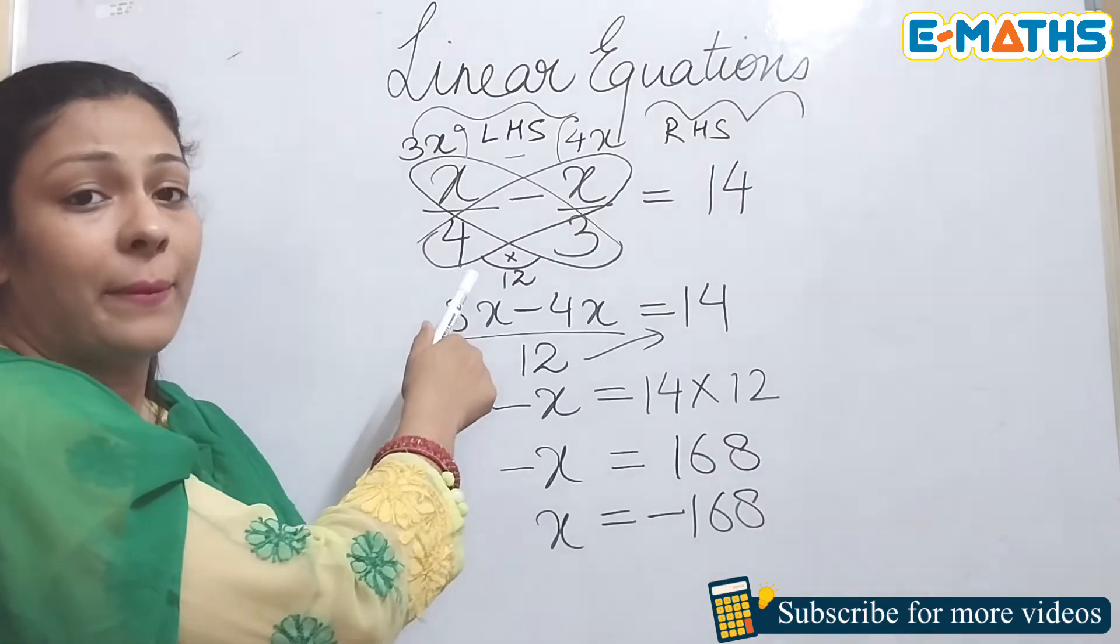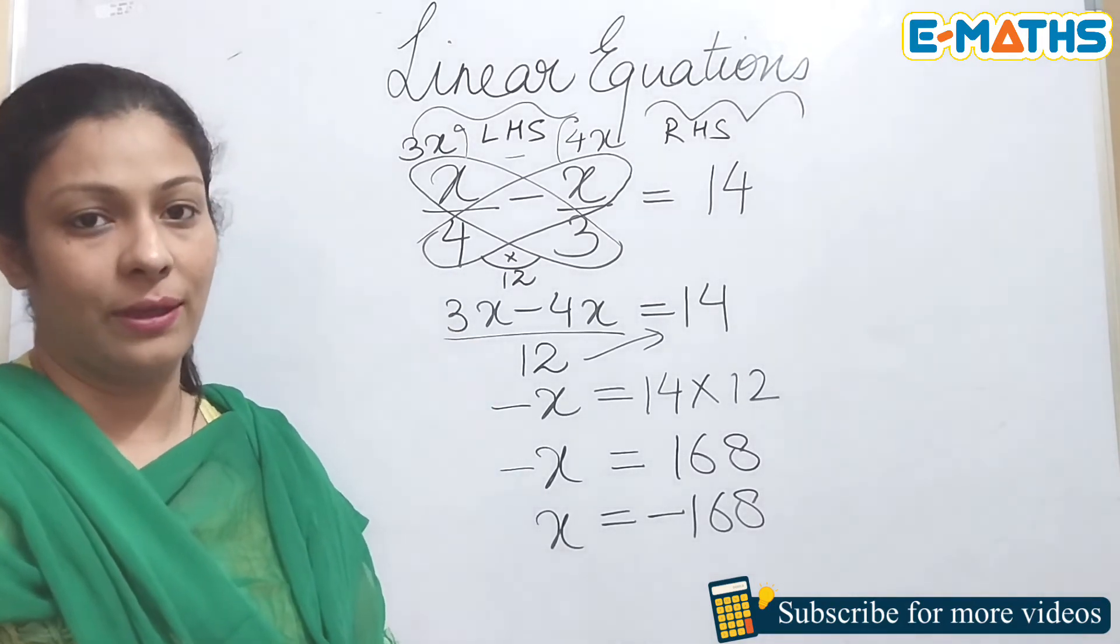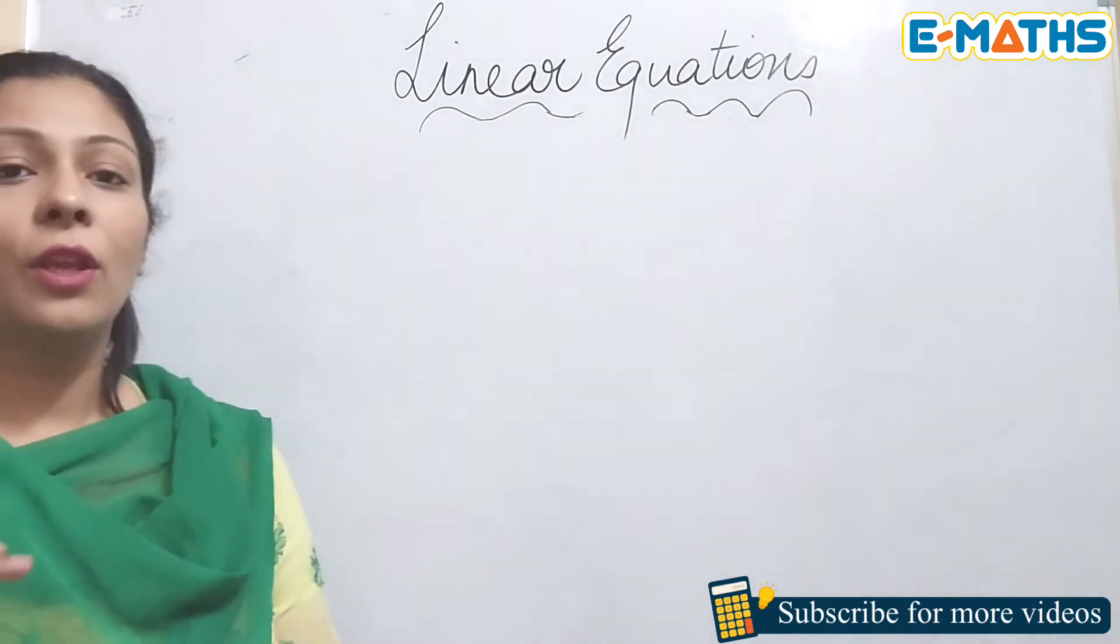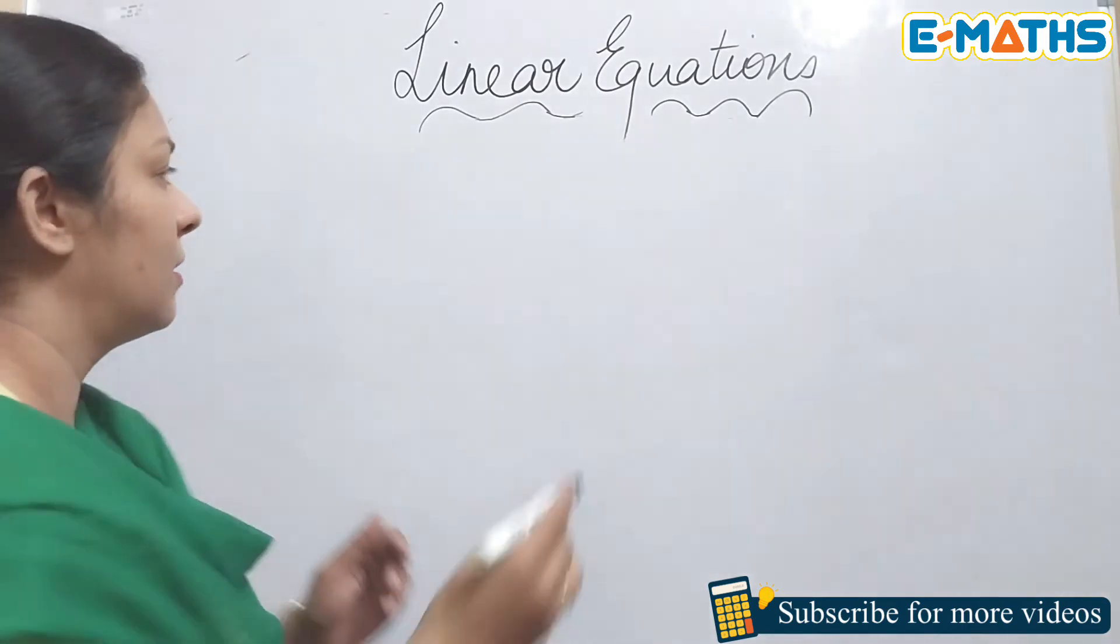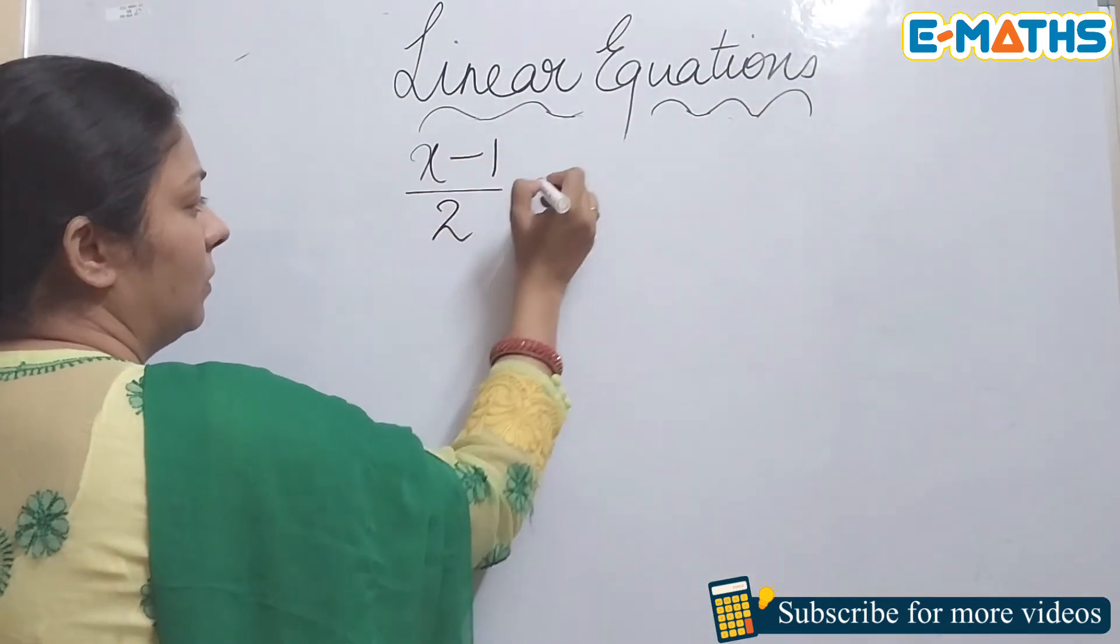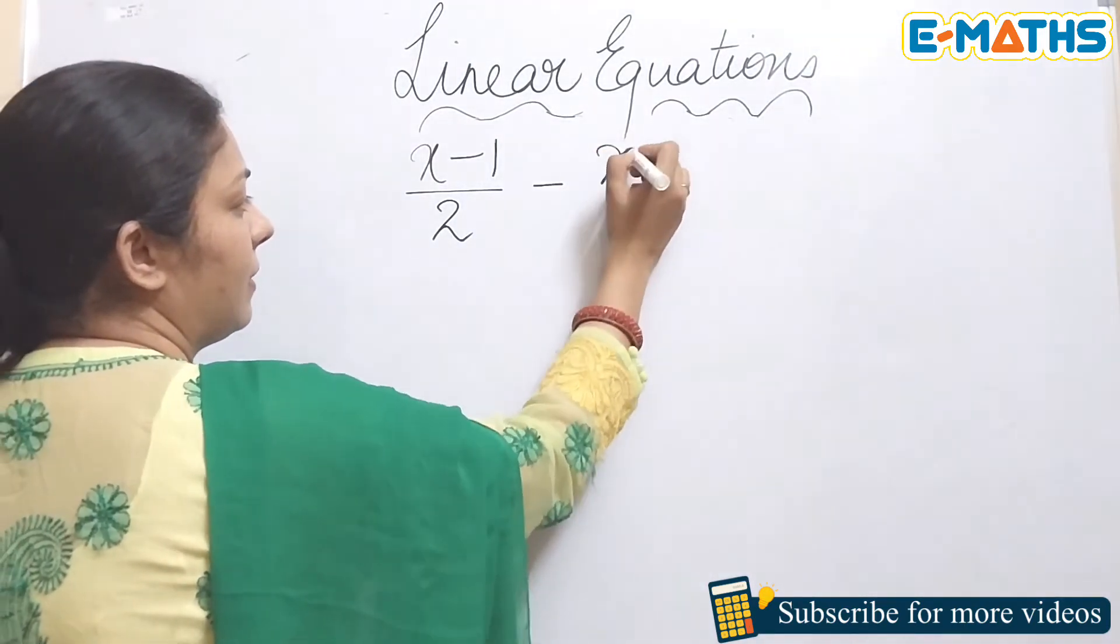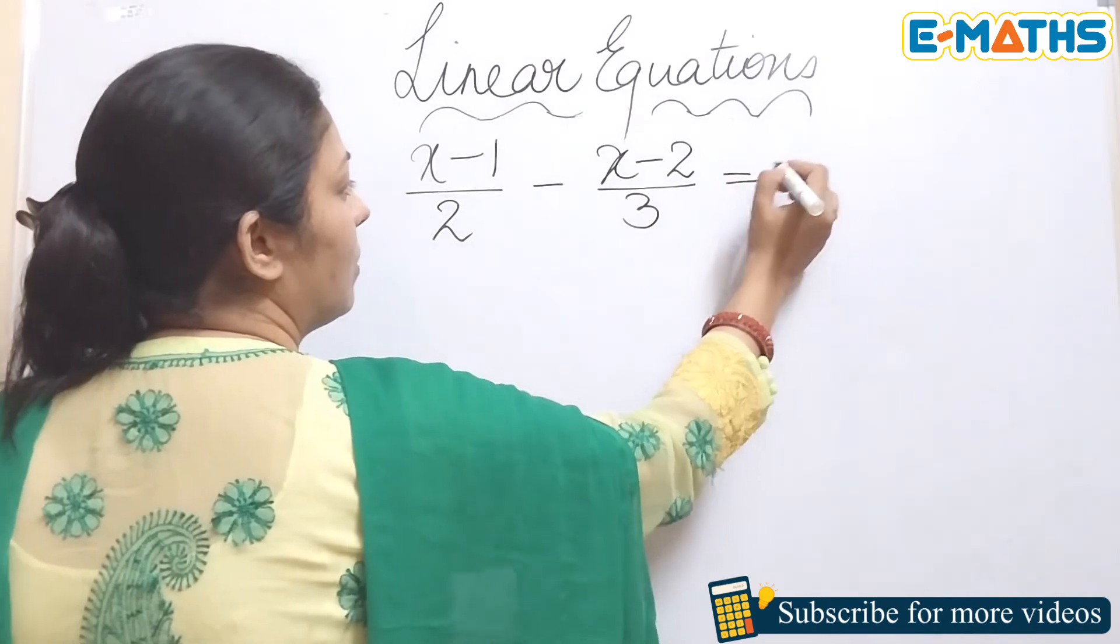So that's how we solve such equations. Remember this butterfly method - it helps a lot in solving bigger equations as well. I'll show you with an example. Now I'm going to take a question of a little higher level. x minus 1 upon 2 minus x minus 2 upon 3 equals to 1.